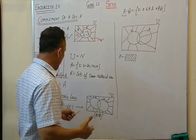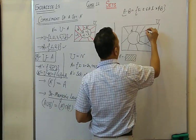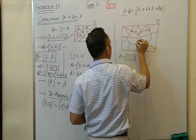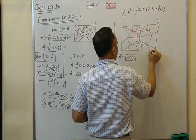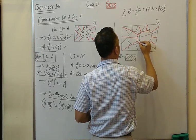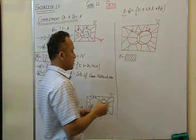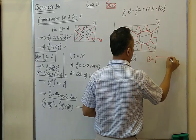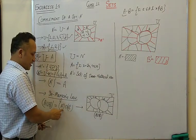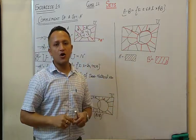B complement is represented by the red shaded region. Now to find A complement intersection B complement, we need the common part of the black shaded region and the red shaded region. If you look carefully, the region outside both circles is shaded both black and red — meaning it belongs to both A complement and B complement. So A' ∩ B' gives the same region as (A∪B)'.